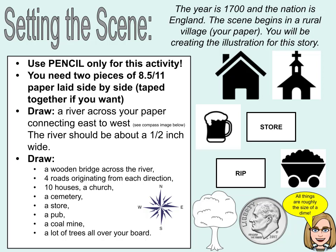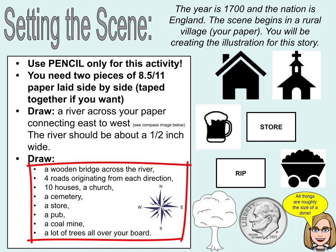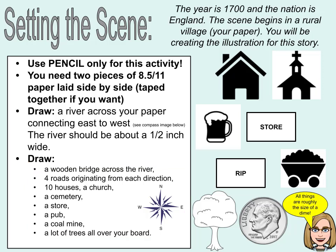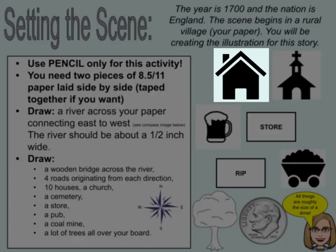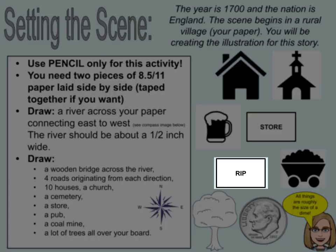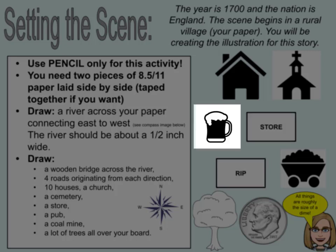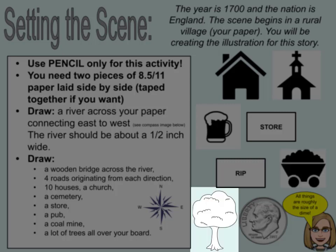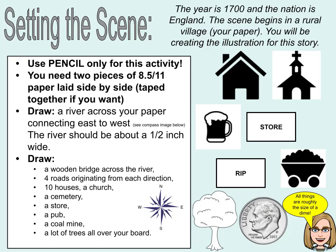Now that you've drawn your river, you're going to draw the following: a wooden bridge across the river, four roads originating from each direction, ten houses, one church, a cemetery, a store, a pub, a coal mine, and a bunch of trees all over the board. If you need a key to see how to draw some of these things, you can use the key on this slide as well.